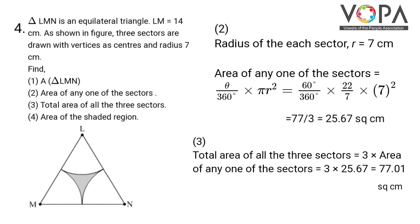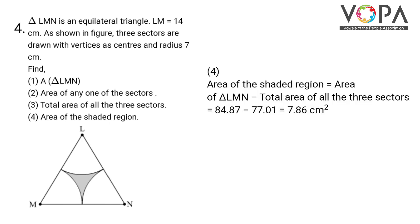We have to find the area of the shaded region, which equals the area of triangle LMN minus the total area of all three sectors — that is 84.87 minus 77.01, giving 7.86 square cm.